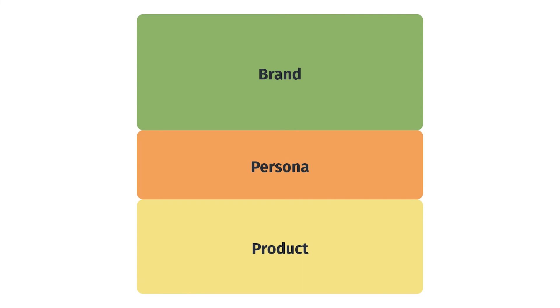So with the messaging framework, it's often broken up into three main areas. The brand, which is an overview of the company as well as an overview of the product or service that we're selling. Then we have the personas, which is the groups of people that we're choosing to promote to. And then a deeper view of the product and how this product relates to each of our personas.